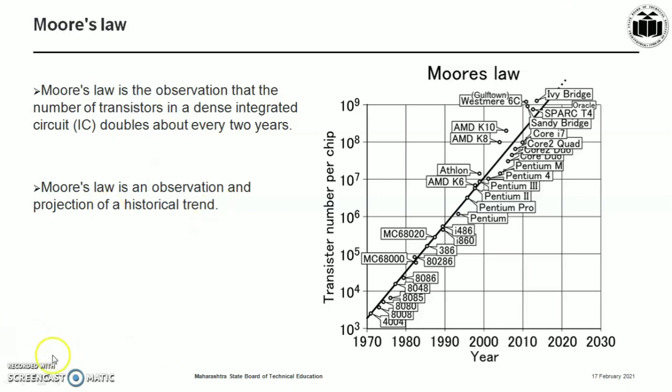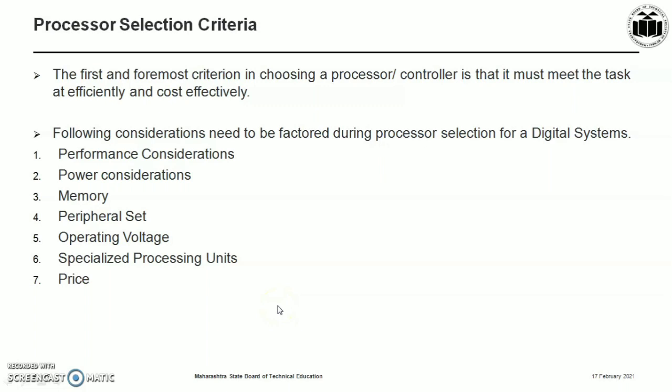These step changes in digital electronics have been a driving force of technological and social change, productivity, and economic growth. Numerous kinds of processors and various designers are available for digital systems. The first and foremost criterion in choosing a processor is that it must meet the task efficiently and cost effectively.